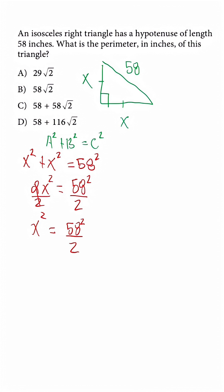Now the reason why I did not get rid of that exponent for 58 is because when we cancel out the exponent on x squared by taking its square root, we're going to do so to the other side. So x is equal to 58 over radical 2.